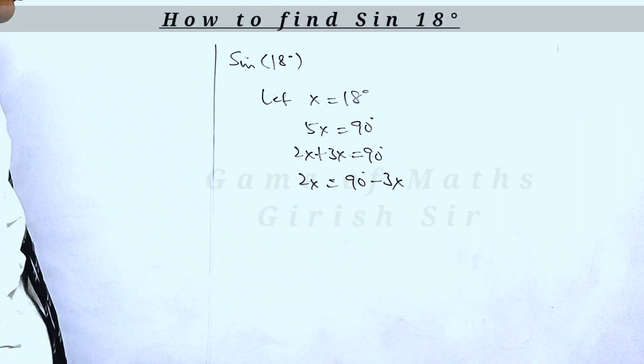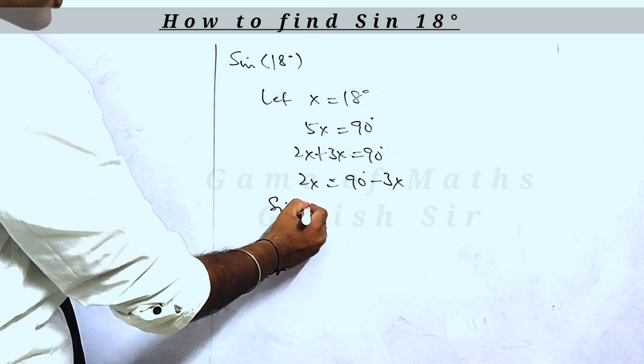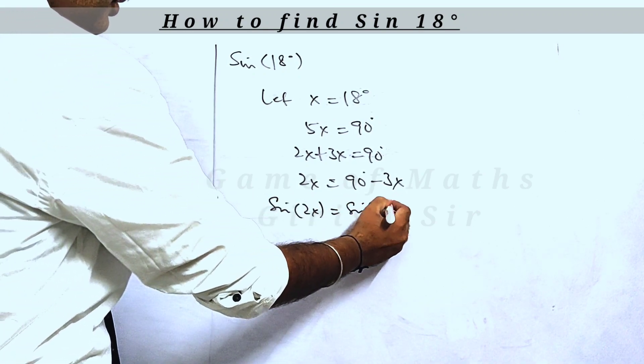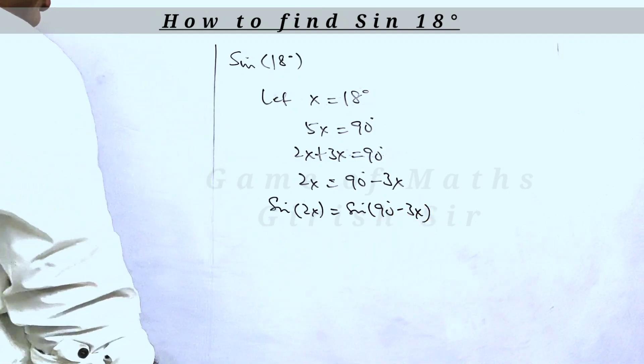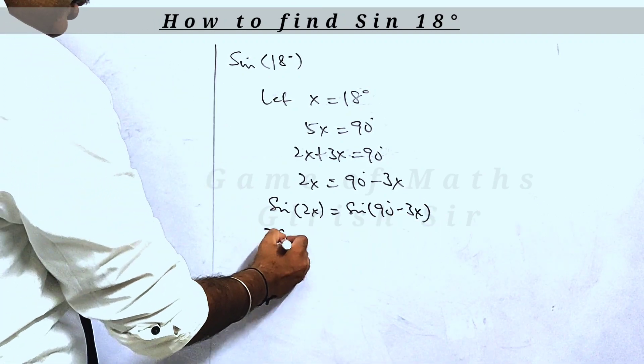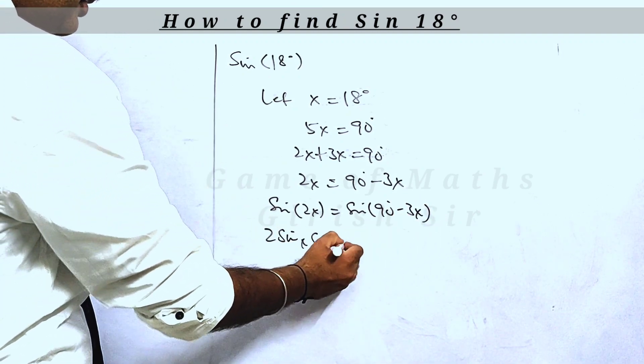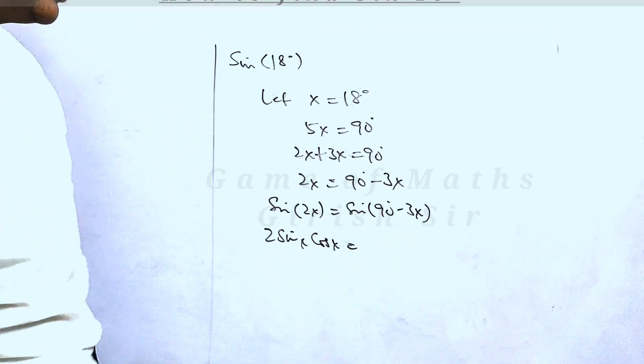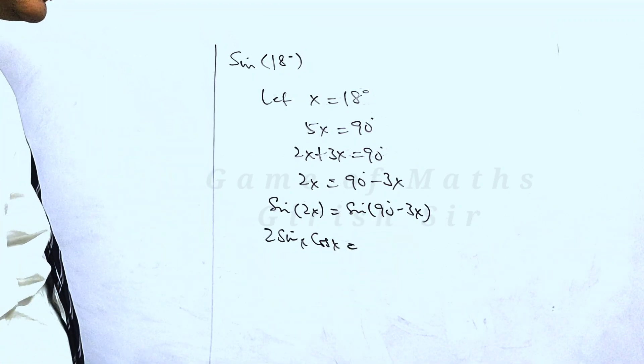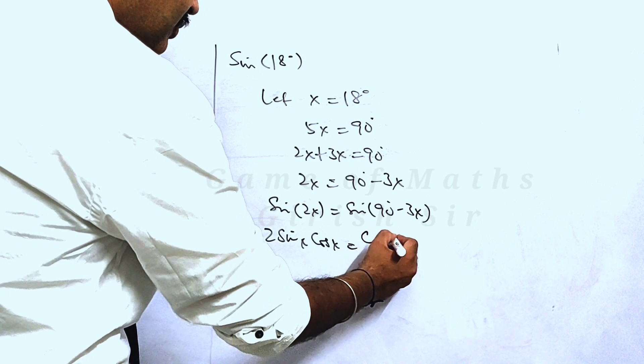Now we will take sin on both sides. Sin of 2x equals sin of 90 minus 3x. Now sin 2x could be written as 2 sin x cos x, and sin of 90 minus theta is cos theta, so this could be written as cos of 3x.